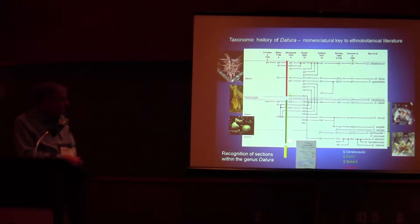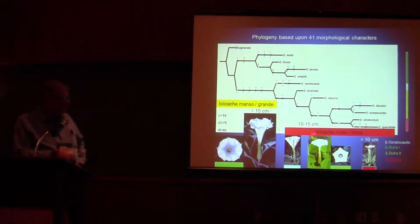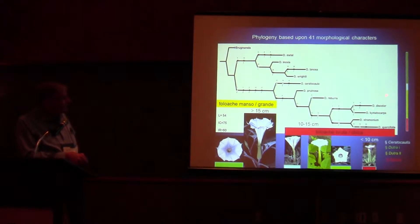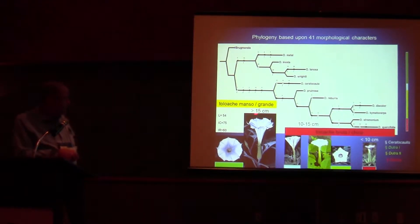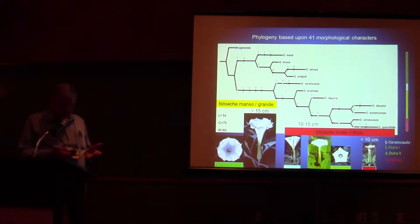Over time, using a color code I'll use throughout the talk, we found that essentially Dutra needs to be split. Some of our morphological work, looking in particular at reproductive characters — about 50 characters in total — we come up with a relationship where Dutra is split quite markedly into two groups. In terms of ethno-taxonomy, the large-flowered ones are Toloache Manso or Toloache Grande, and the smaller-flowered ones are Toloache Bruta or Chica, showing a parallel in ethno-classification.